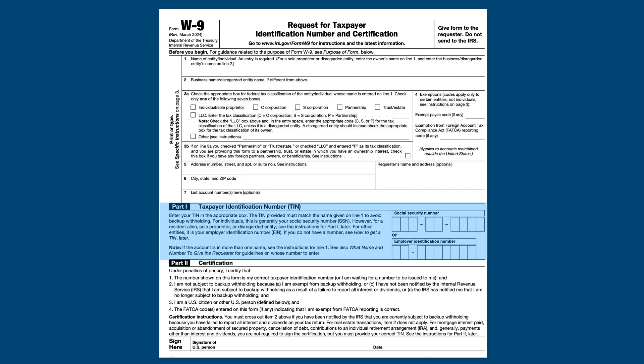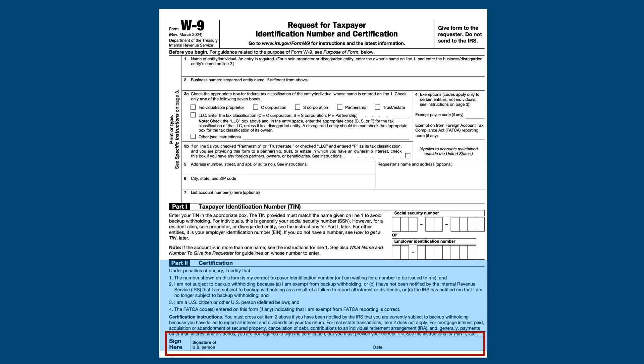In Part 1 of the form, the Taxpayer Identification Number is entered. This can be a Social Security Number, ITIN, or ATIN, which is entered here, or an Employer Identification Number, which is entered here. Part 2 of the form is signed by the individual or representative of the entity, indicating that the tax identification number provided is correct and the person or entity is not subject to backup withholding. Backup withholding will be the subject of another video.